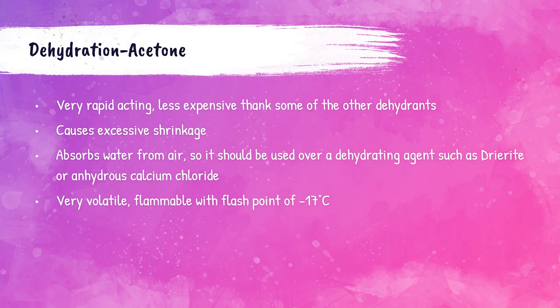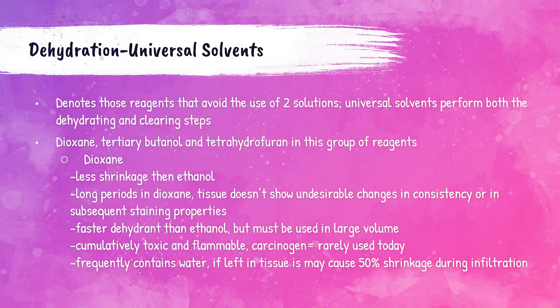Acetone can also be used as a dehydrating agent. It is very quick-acting and less expensive to use, but can cause shrinkage of the tissue and should be used over a dehydrating agent such as drierite or anhydrous calcium chloride. Acetone is considered very volatile, meaning it evaporates quickly, and is flammable. OSHA mandates the eight-hour time-weighted average PEL at 1,000 parts per million.